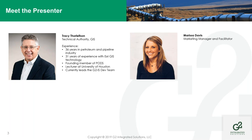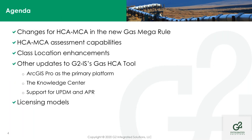Thank you, Marissa. What we'd like to do today is introduce the new Gas HCA tool and the changes to the tool that allow us to be in compliance with the new requirements around moderate consequence area, or MCA, determination. That rule — Part 1 — was published in October of last year, and as most of you are keenly aware, it goes into effect on July 1st of this year.